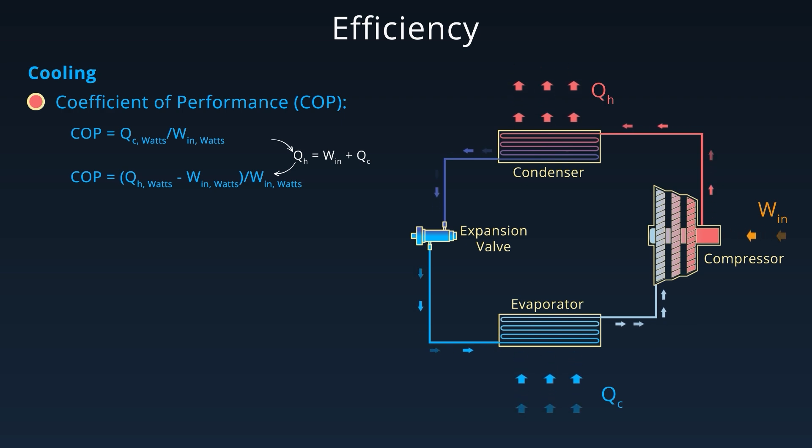Another commonly used efficiency metric is the energy efficiency ratio or EER. EER is defined as the cooling output in BTU per hour divided by the electrical power input in watts.